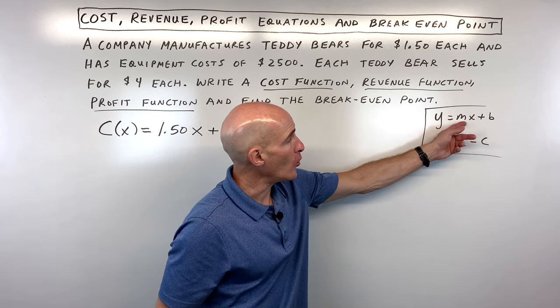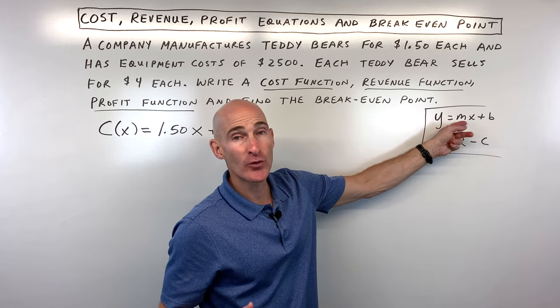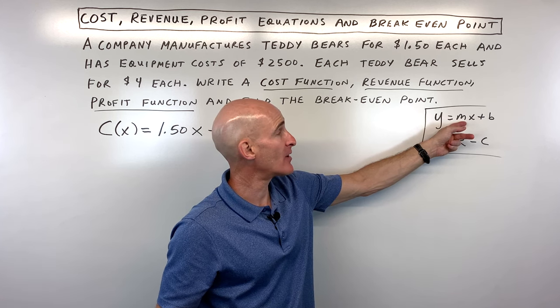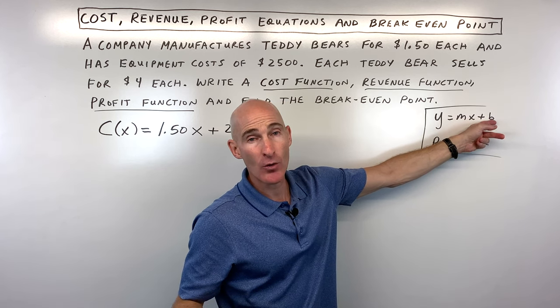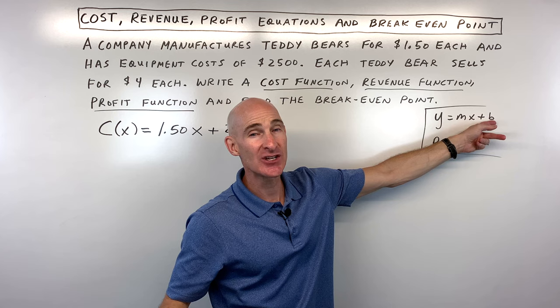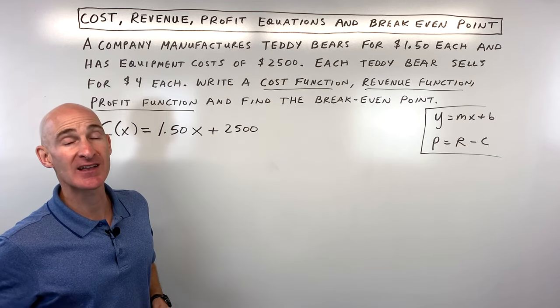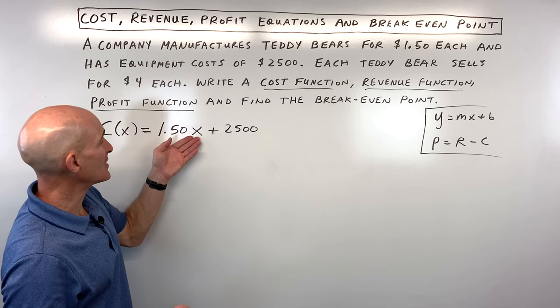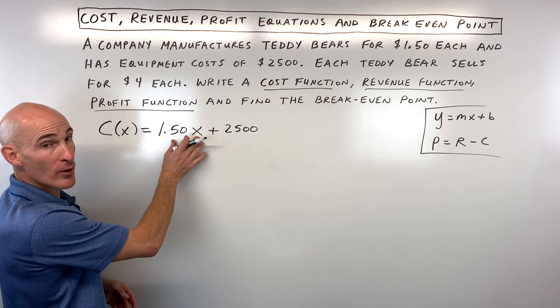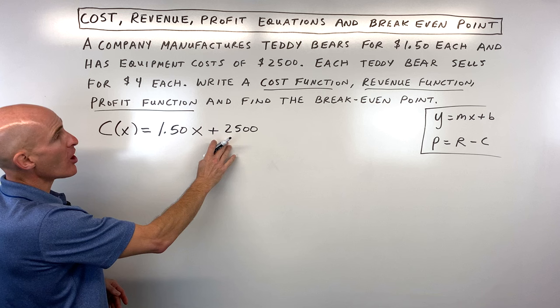So remember, when you think of the slope or the M-value, that's like the rate, like how much it costs per teddy bear to make, whereas the B, that's our Y-intercept or our initial condition or our starting amount, and these were our starting expenses, the $2,500. That's just a fixed or constant cost, whereas this is going to increase as you make more and more teddy bears. So that's our cost function.